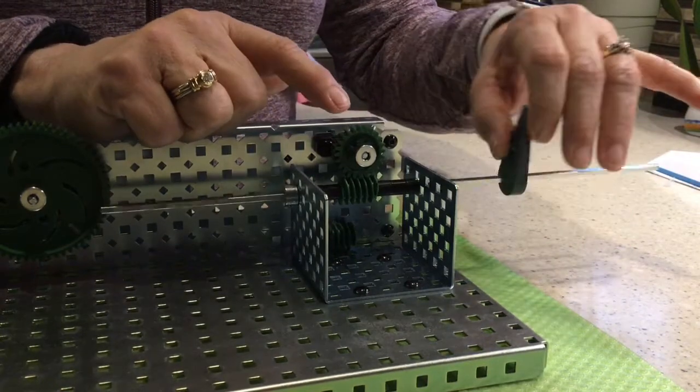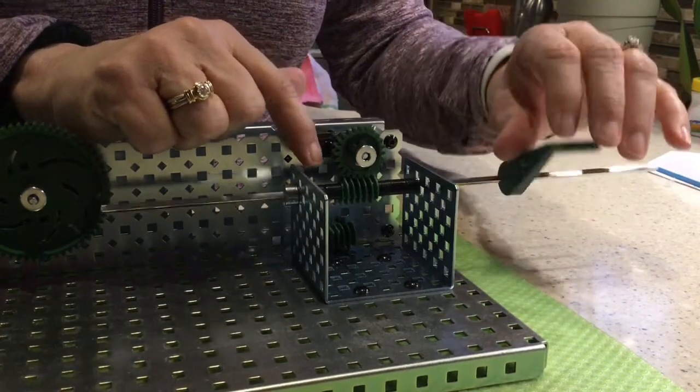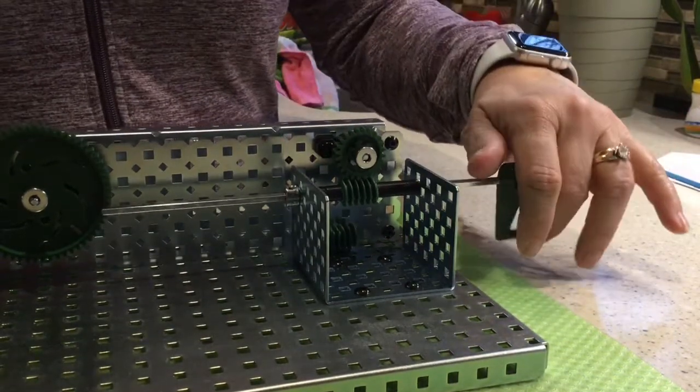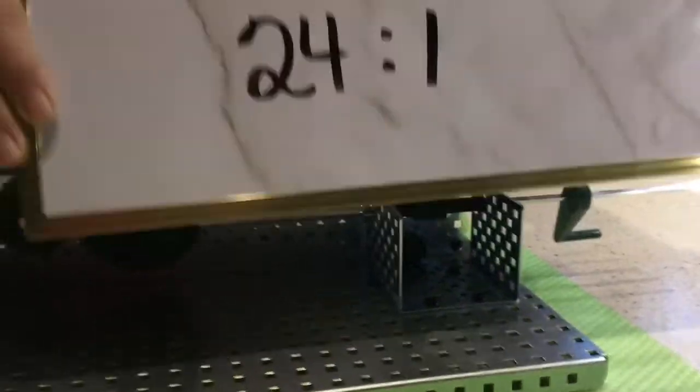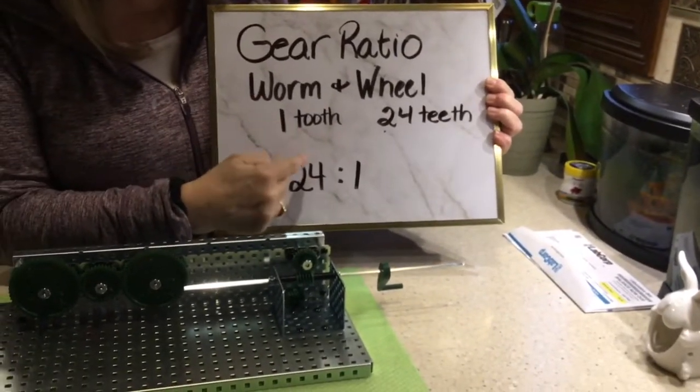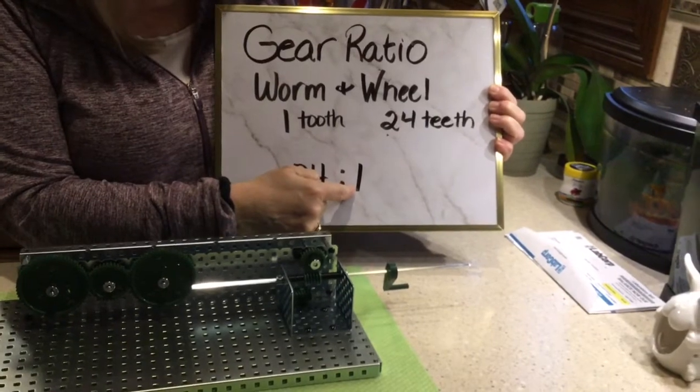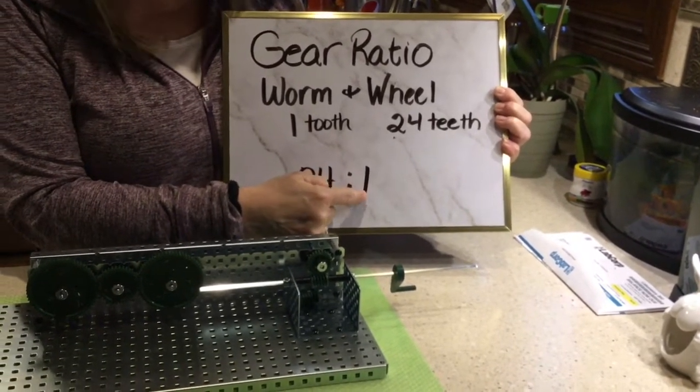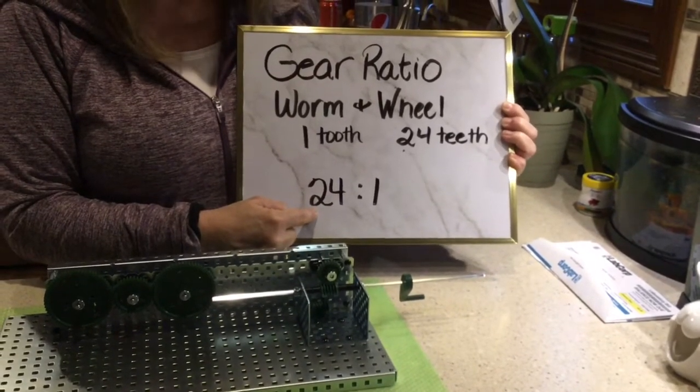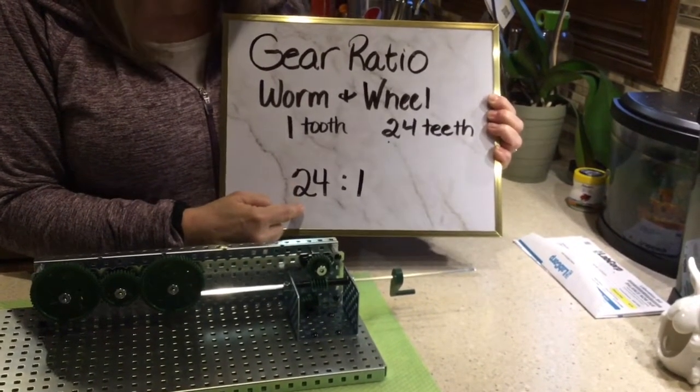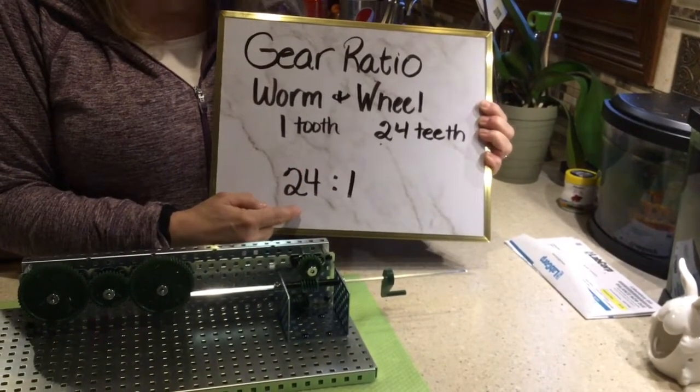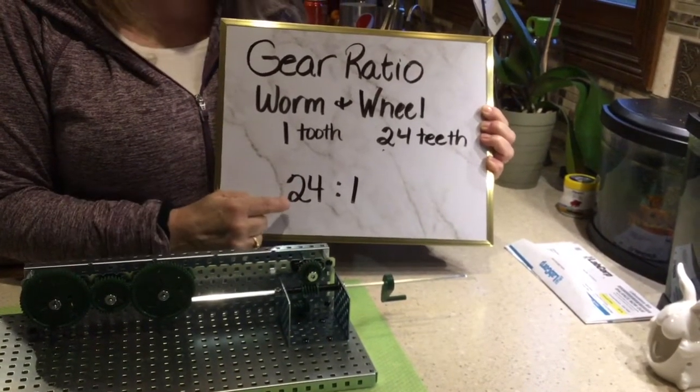So that means that you have a drive of one and a driven of 24. So you're going to mark it differently. When we go back to this, you would see that you have your one, which is your worm, your drive gear, and 24, which is your gear, your driven gear. So your ratio is going to be 24 to one, which is extreme torque. And so it is slowing that down so it can grip.